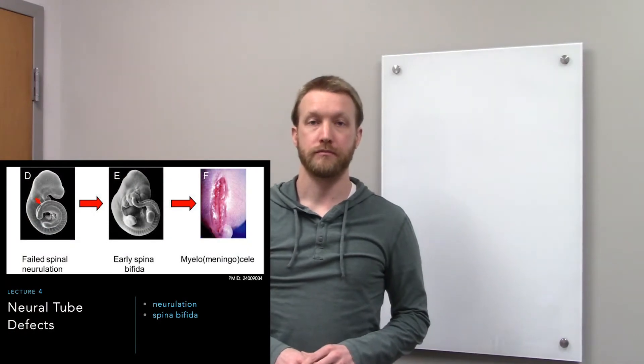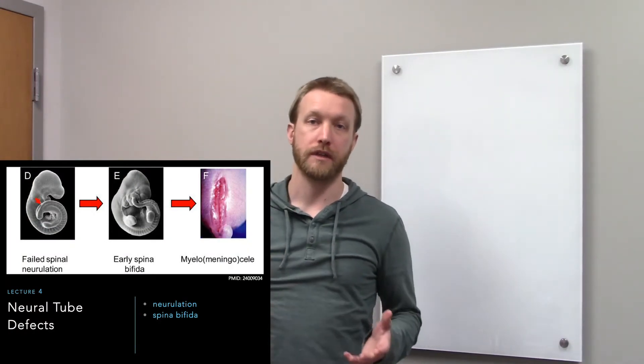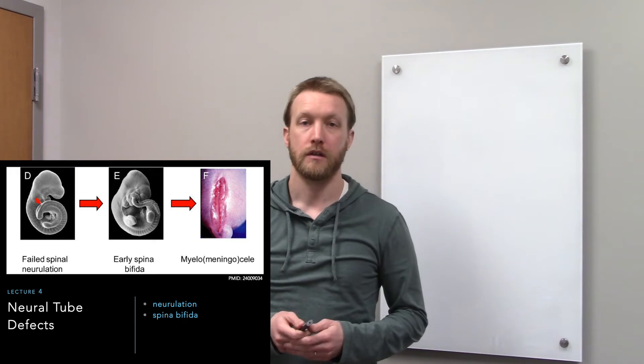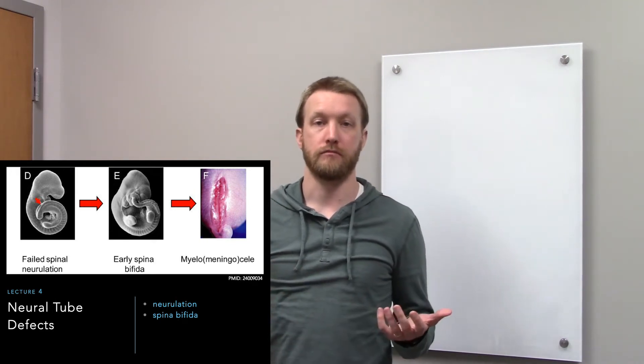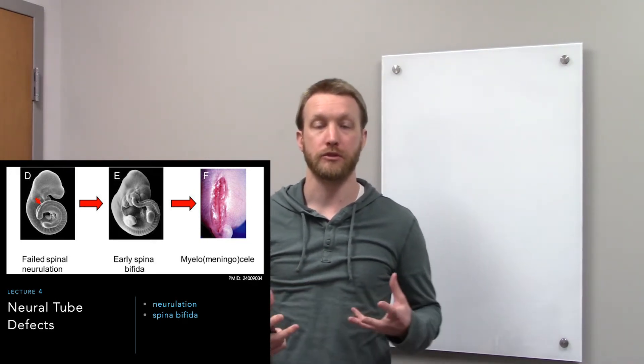So we're all basically tubes. Food goes in one end and comes out the other. The digestive tract is a tube with a lot of wrinkles in it, a lot of bends, a couple swellings.